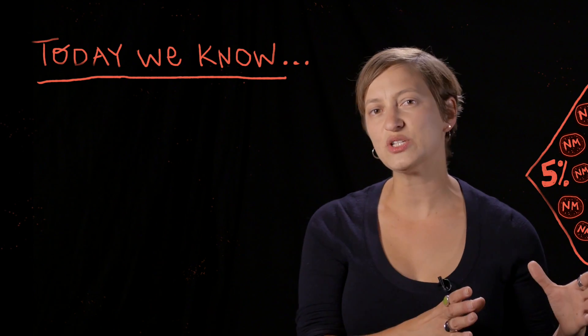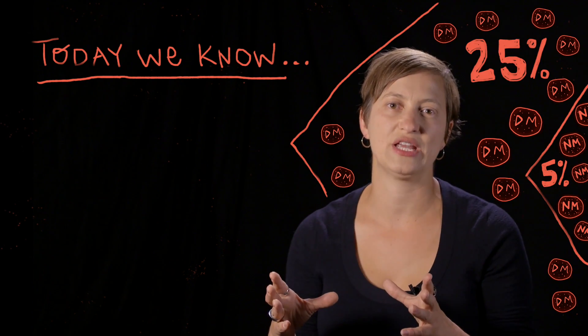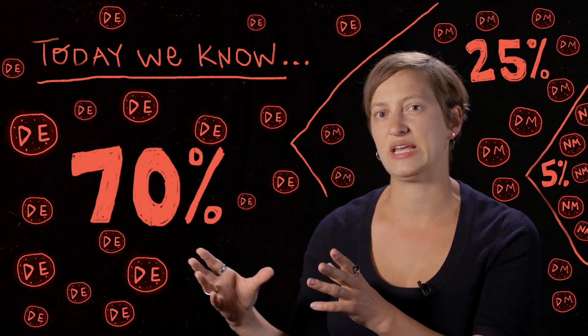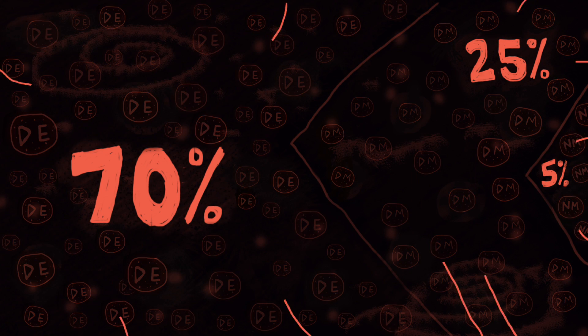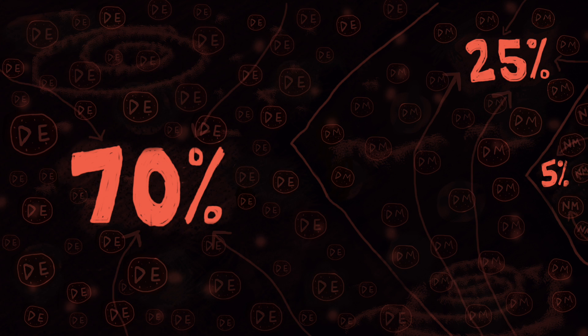Current observations tell us that the universe is made up of about 5% normal matter, 25% dark matter, and 70% dark energy. We actually have several lines of evidence that all point to the same basic picture and the same set of numbers.